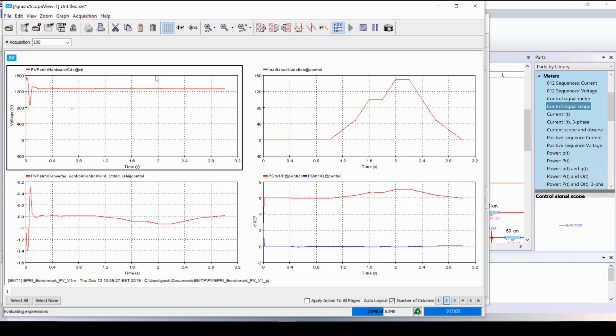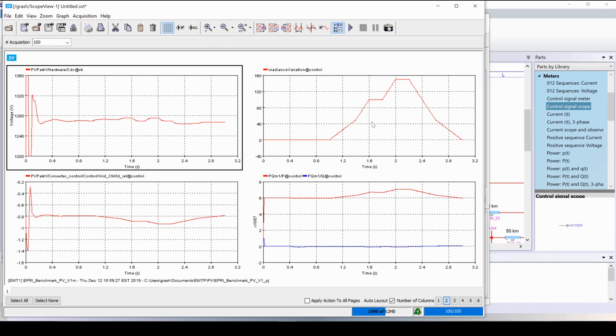there is a slight variation of the DC voltage. And here the d-axis current reference is also changing with irradiance.